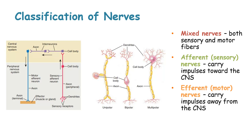These nerves can be classified based on their structure or function. When classifying based on structure, we have a unipolar nerve, a bipolar nerve, and a multipolar nerve. When classifying based on function, we have afferent or sensory nerves, which carry impulses towards the central nervous system, and efferent or motor nerves, which carry impulses away from the central nervous system. Some nerves are known as mixed nerves, which have both sensory and motor fibers.